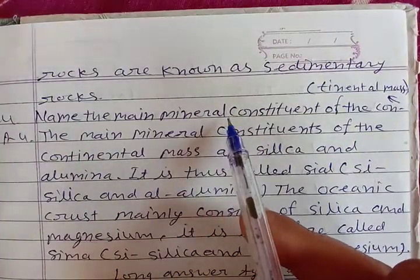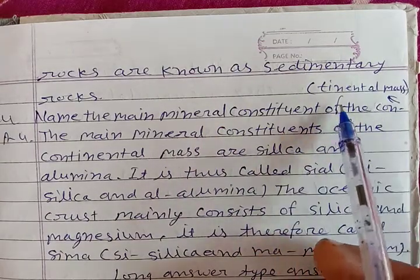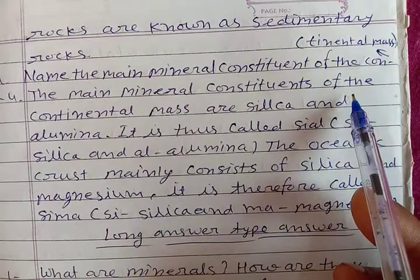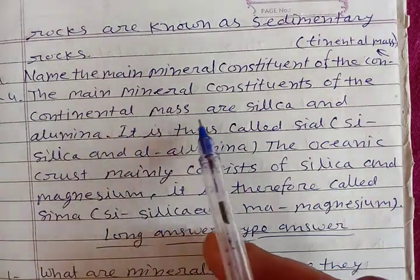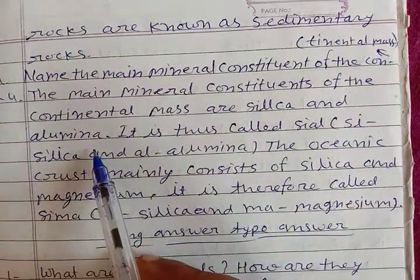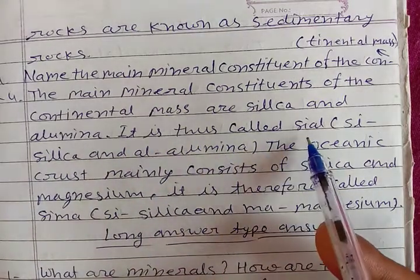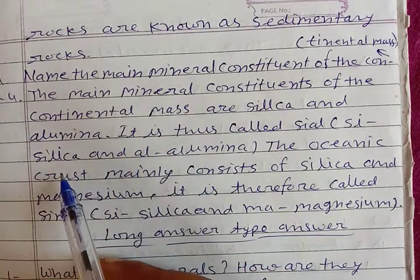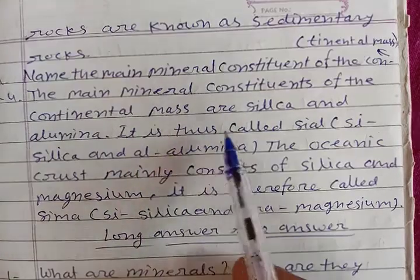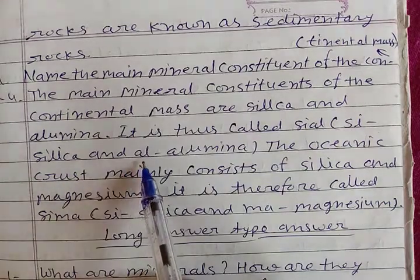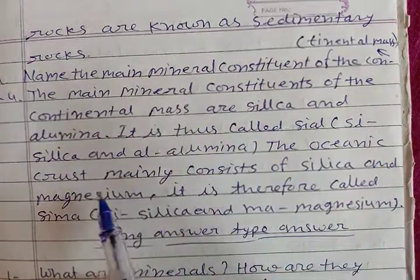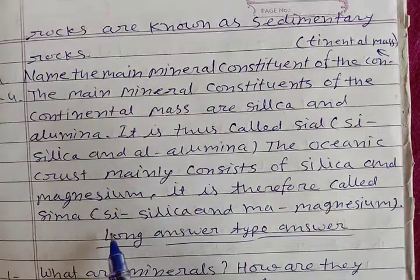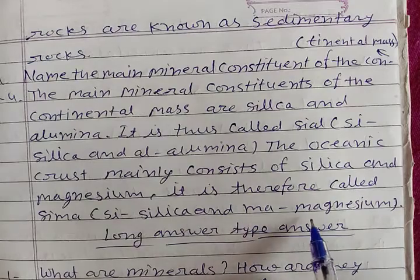Question fourth: name the main minerals that constitute the continental mass. The main minerals that constitute the continental mass are silica and aluminum. It is thus called sial — si for silica and al for alumina. The oceanic crust mainly consists of silica and magnesium and is therefore called sima — si for silica and ma for magnesium.